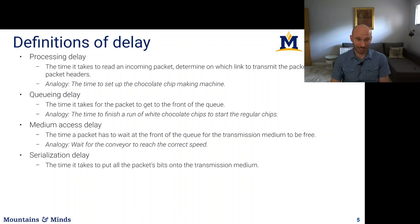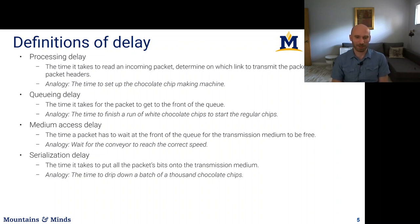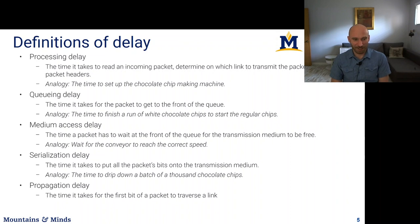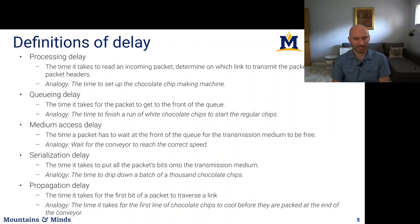Serialization delay is how quickly we can put bits onto the transmission medium — in the cookie analogy, this is the time to drip down a batch of a thousand chocolate chips, which depends on the tape speed and the chocolate squirt rate. Propagation delay is the time a bit takes to traverse a link — analogous to the time it takes for the first line of chips to cool before they are packed at the end of the conveyor, which has some length that allows the chips to cool.